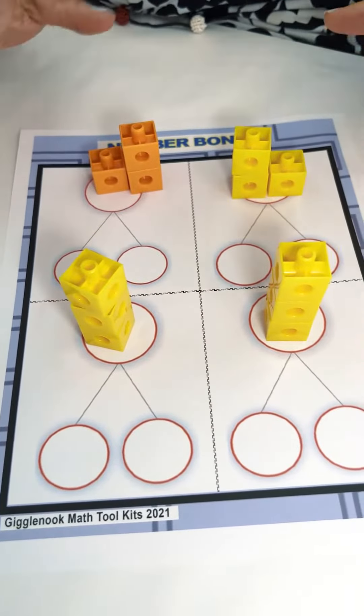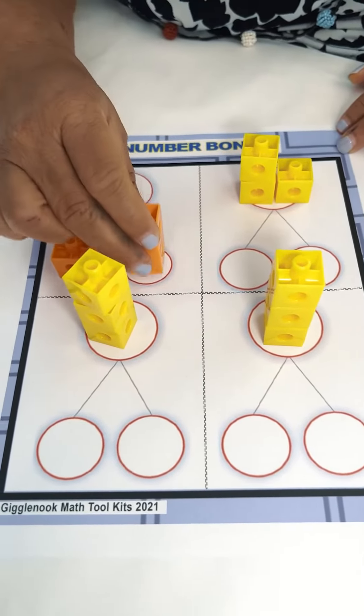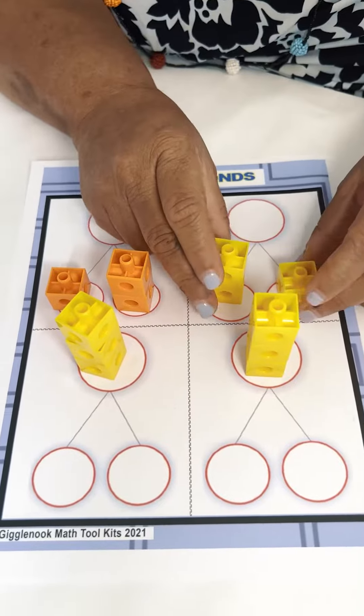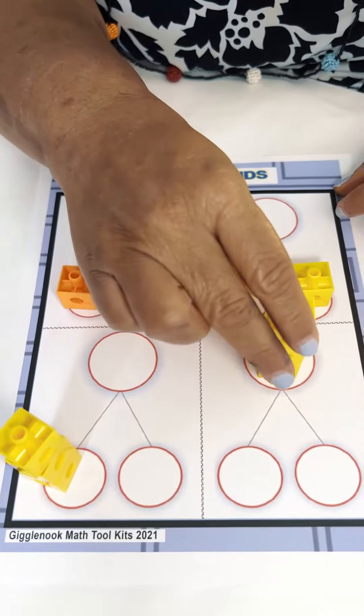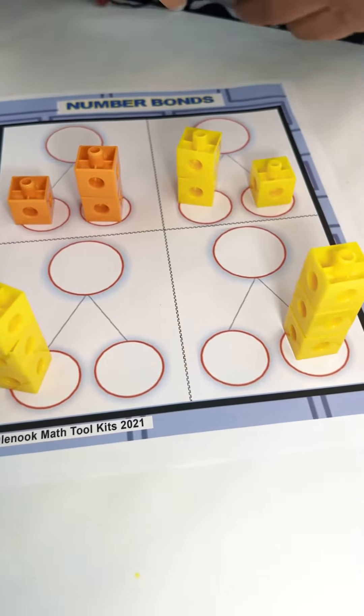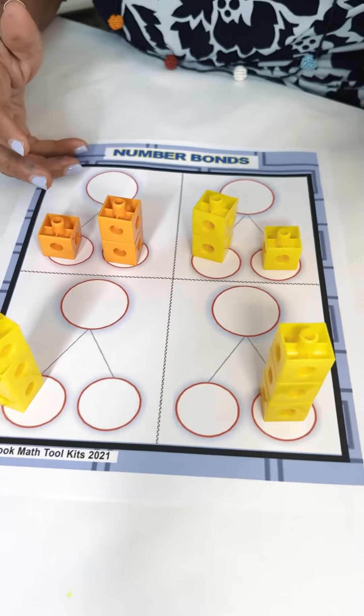So we set up the number three. We say, oh, let's break it apart. Three could be one and two, or two and one, or three and zero, or zero and three. Look at all the ways we could break up three.